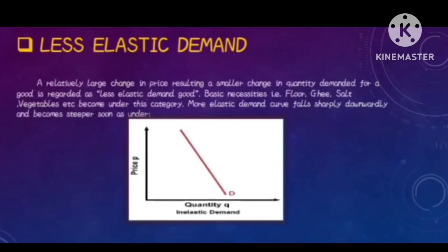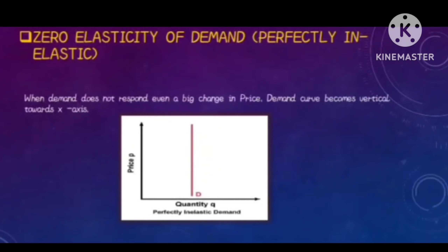The third kind is zero elasticity of demand, also called perfectly inelastic. When demand does not respond even to a big change in price, the demand curve becomes vertical towards the x-axis. In this case, elasticity of demand equals zero, and we draw the demand curve as a vertically straight line, showing no meaningful change in quantity demanded regardless of price.